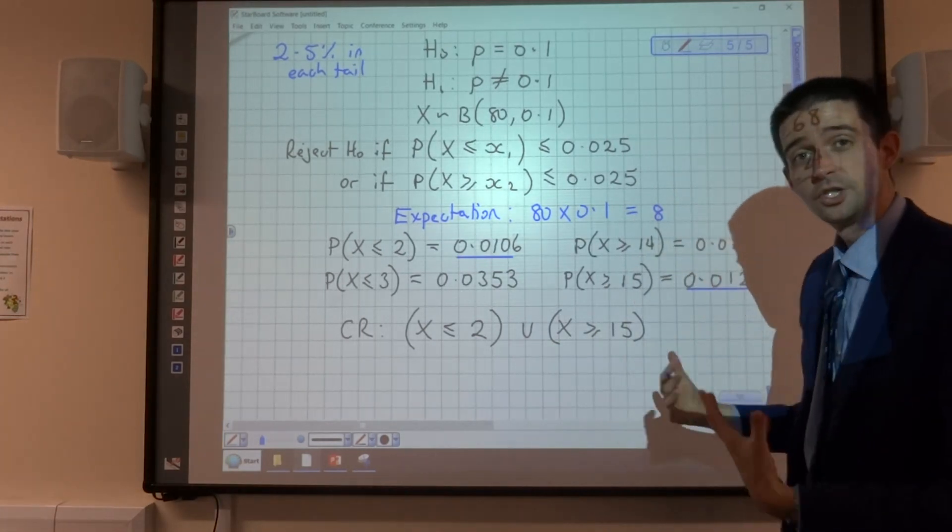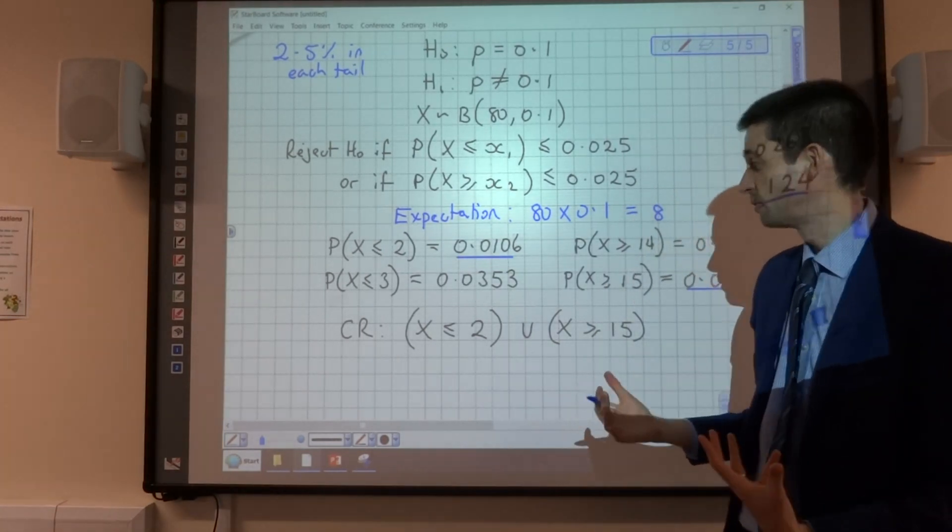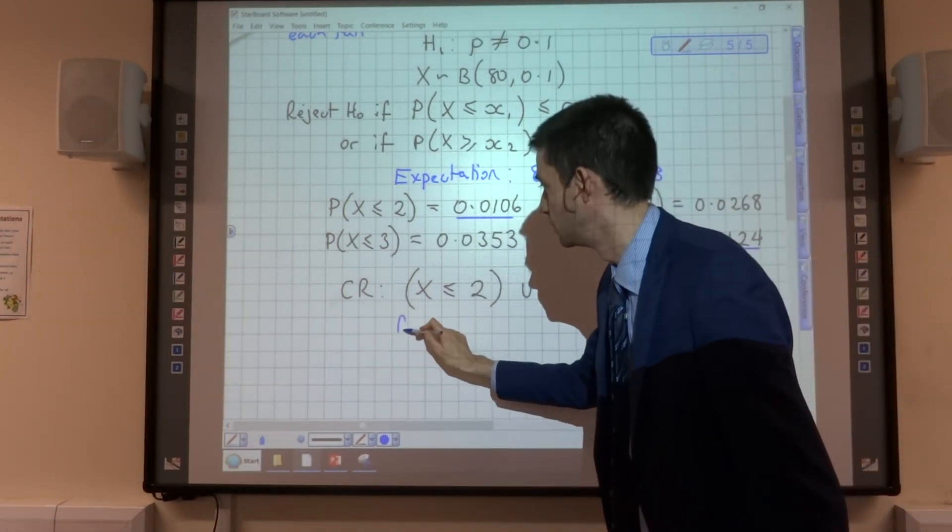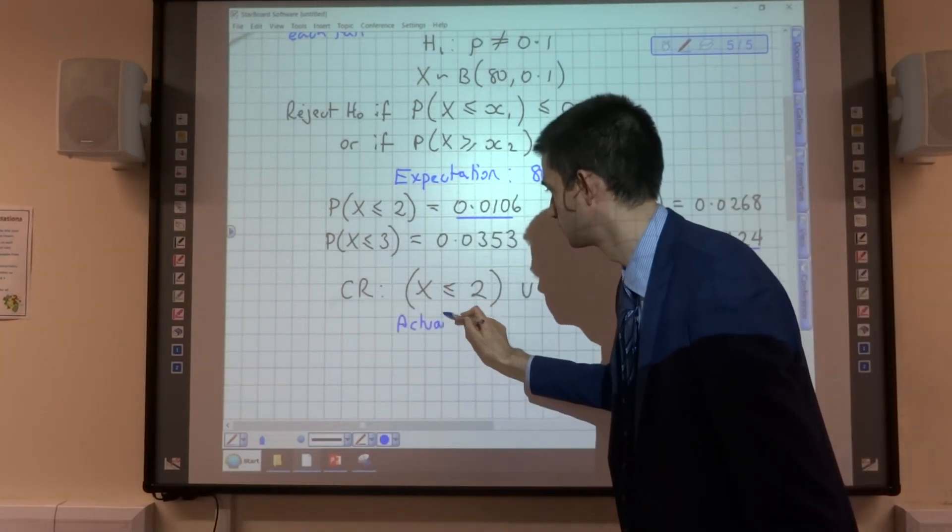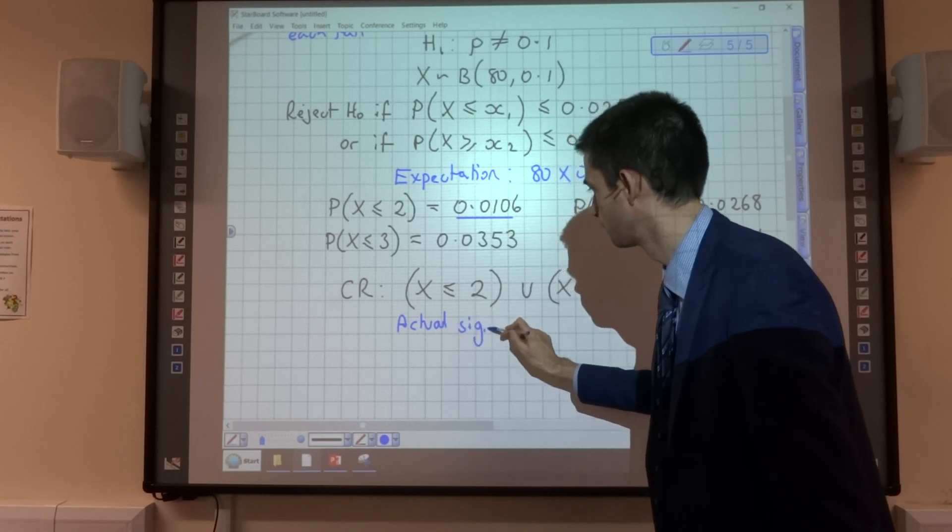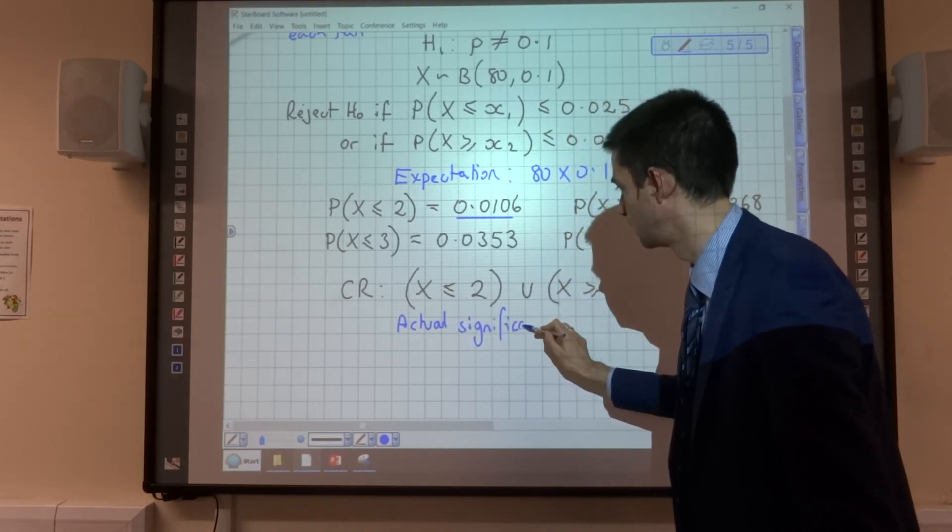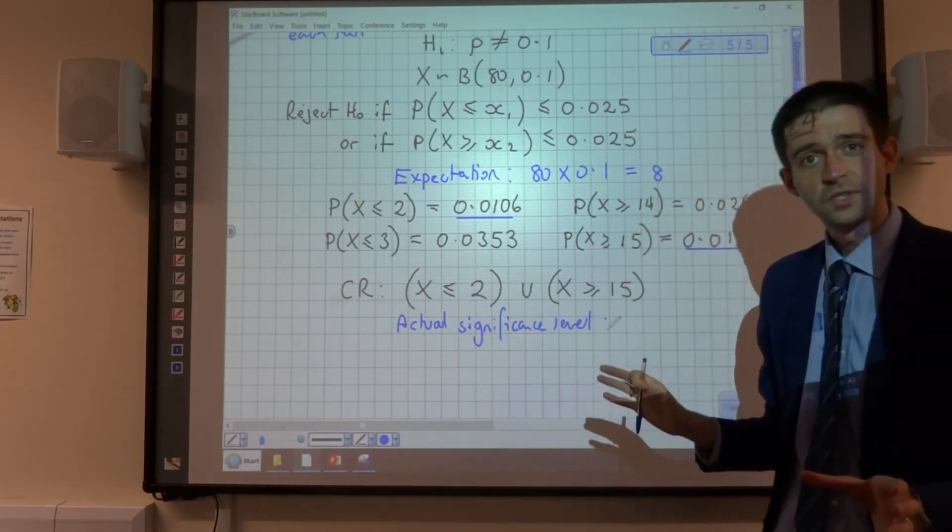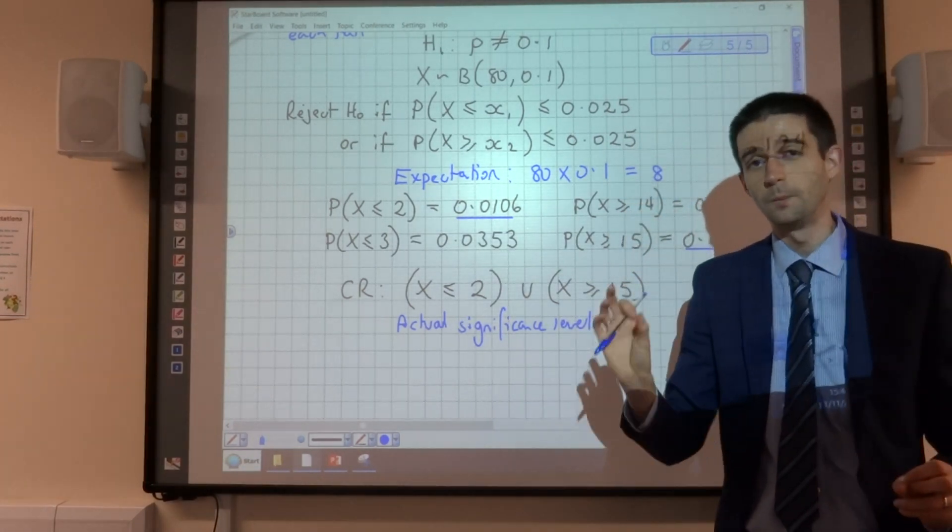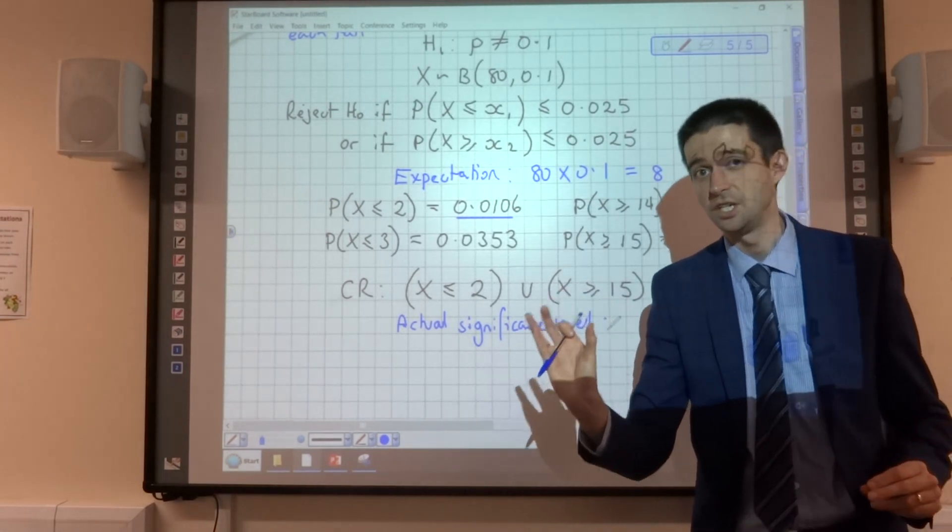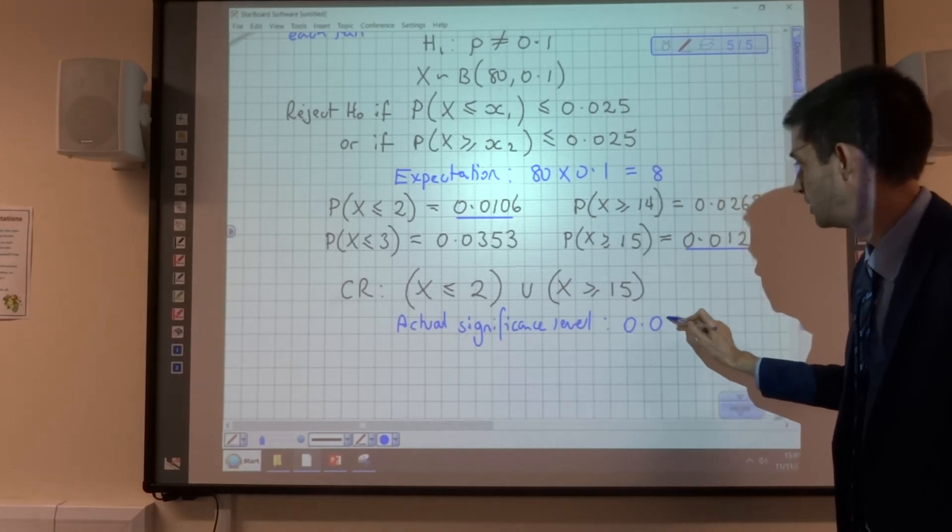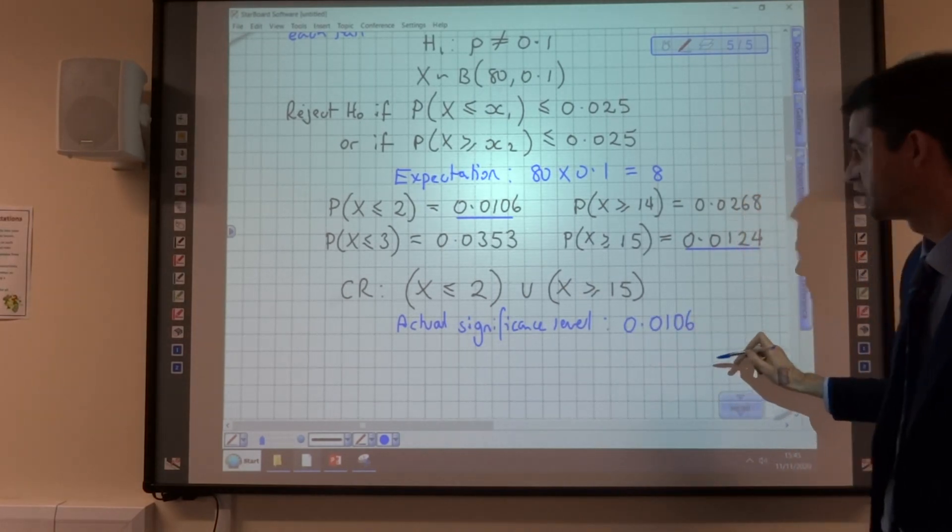Now we can be asked to do a number of things as a follow-up to this. One of the things that we can be asked to do is to state the actual significance level. Because the actual significance level is not 5%, because we've got a critical region where we know the probability of rejection in each tail.